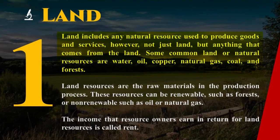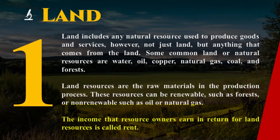Land includes any natural resource used to produce goods and services — not just land, but anything that comes from the land. Some common land or natural resources are water, oil, copper, natural gas, coal, and forest. Land resources are the raw materials in the production process. These resources can be renewable, such as forests, or non-renewable, such as oil or natural gas. The income earned from these resources is called rent.